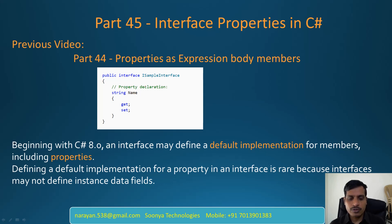Please go through the previous video before going through this one. The syntax for Properties in an Interface is: public interface InterfaceName, then DataType and PropertyName with Get and Set. We will not provide any implementation for properties inside interfaces. Implicitly, interface members are public abstract, so we will not provide the public abstract keywords here.